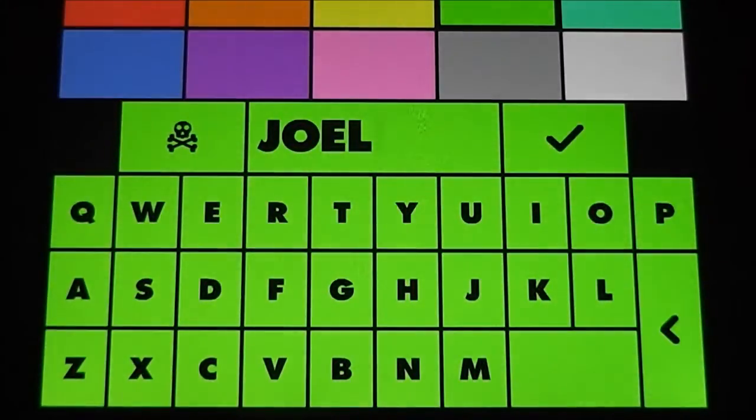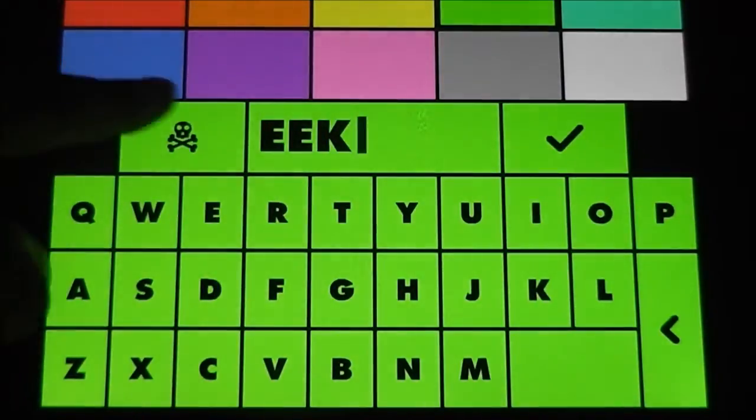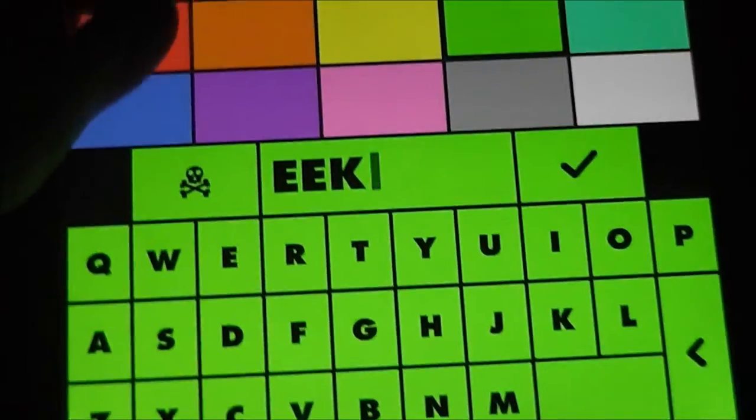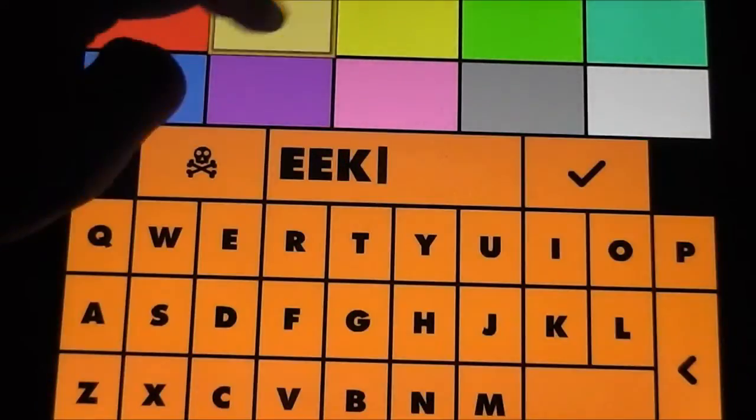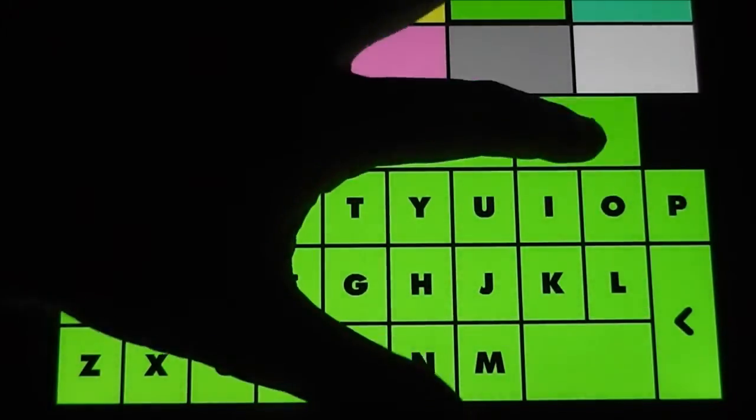The next thing we can do is edit the player. We can put in some different letters here, like that. We can even delete them. You can change the player's color, and it has little musical chimes there. That's kind of neat. We can edit that like this.